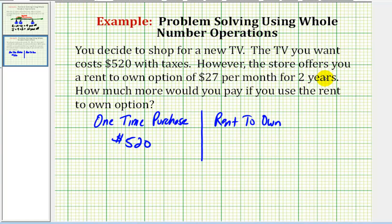And since there's 12 months in one year, there will be 24 months in two years. So we'll pay $27 for 24 months. So the cost for the rent to own option would be $27 times 24.